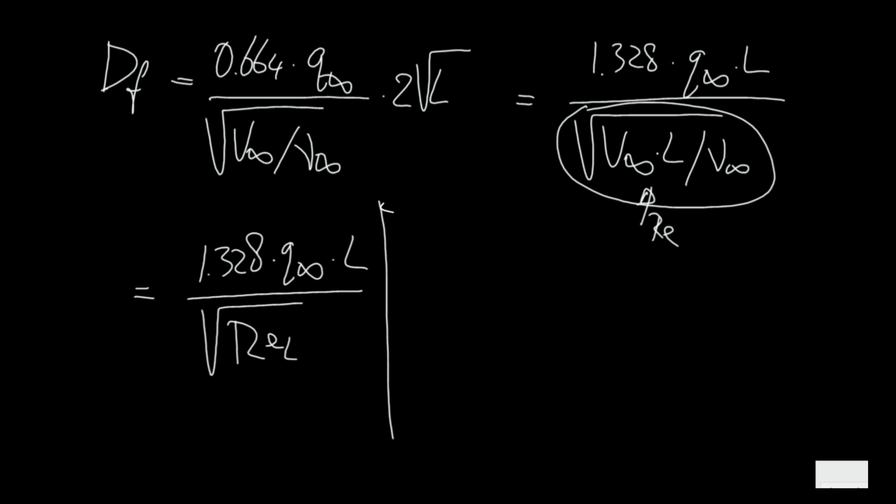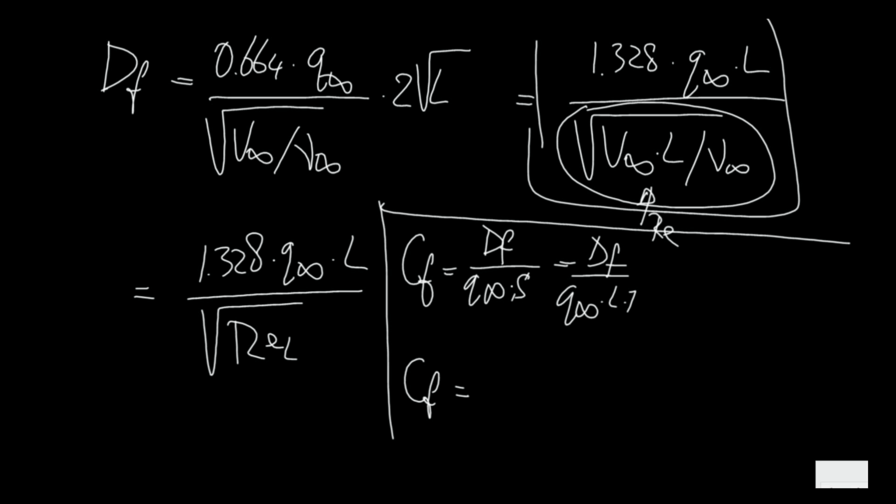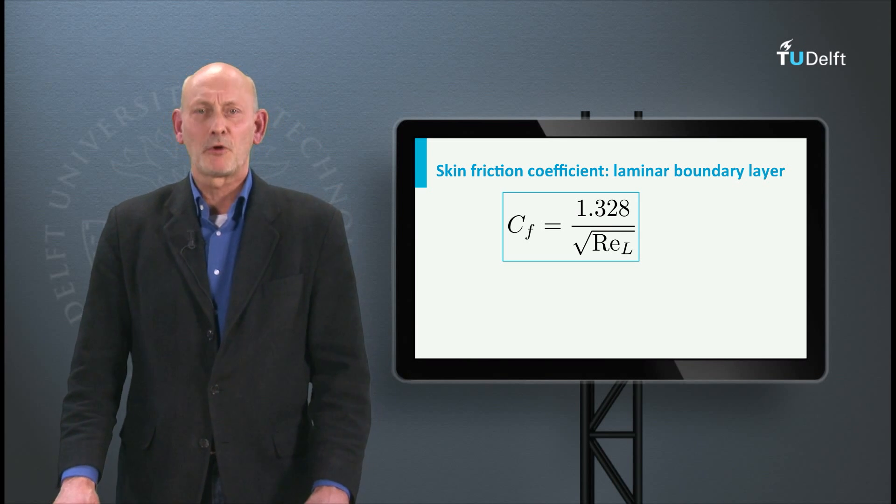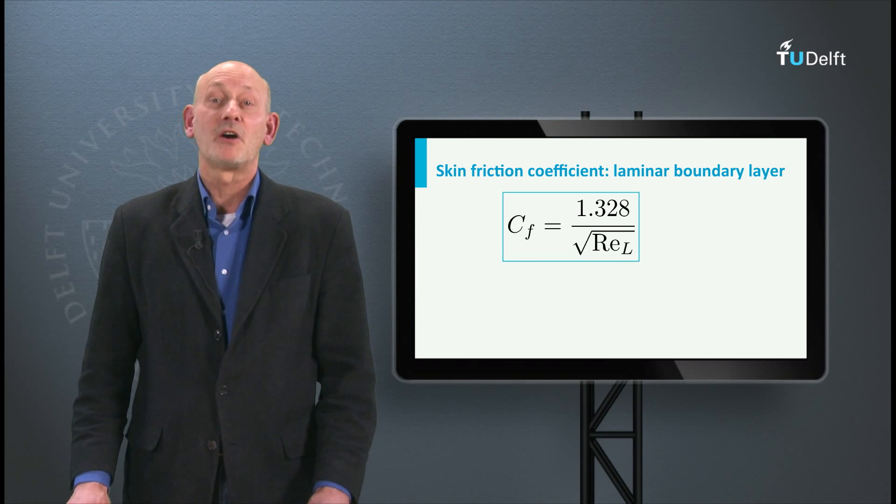Now let us define the skin friction drag coefficient. CF is the drag force divided by Q infinity times S. This is DF divided by Q infinity times L times 1, because we have a width of the flat plate of 1 meter. Now if we write CF with the result of the drag force calculation, then we get CF is 1.328 divided by the square root of REL. So we have found that the skin friction coefficient on the flat plate is equal to 1.328 over the square root of the Reynolds number based on the flat plate length L.